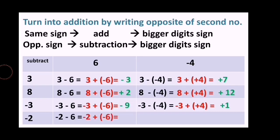The fourth row is negative 2 minus 6, written as negative 2 plus negative 6 after converting subtraction to addition. Both numbers are negative - same sign - so we add: 2 plus 6 equals 8, with a negative sign giving negative 8. For the second column, negative 2 minus negative 4 similarly gives the answer positive 2.